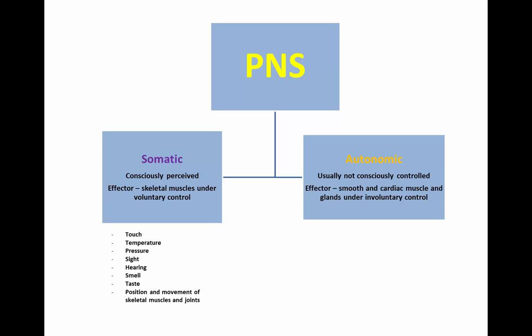The autonomic nervous system is concerned with sensations that are usually not consciously perceived, and actions carried out are involuntary or automatic. Effectors are smooth muscle, cardiac muscle, and glands that secrete — all under involuntary control.